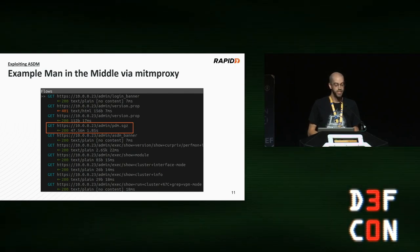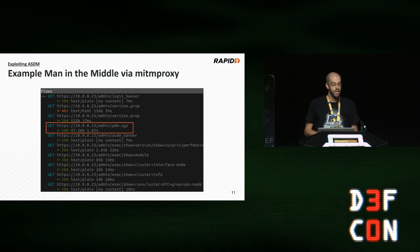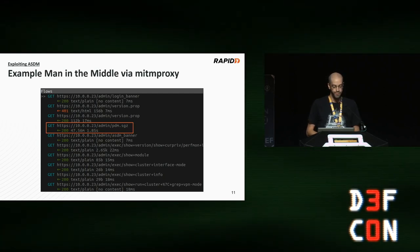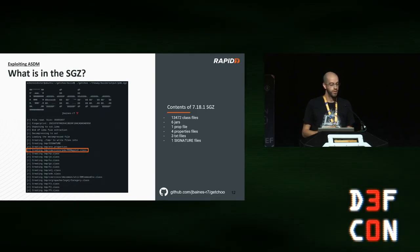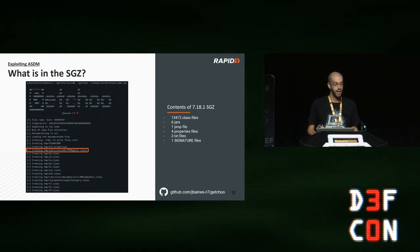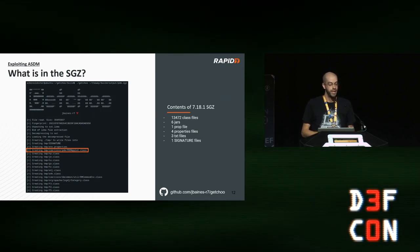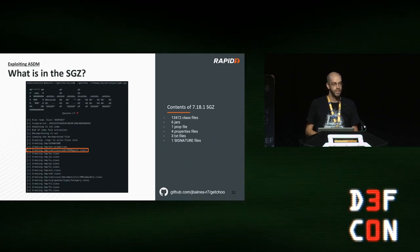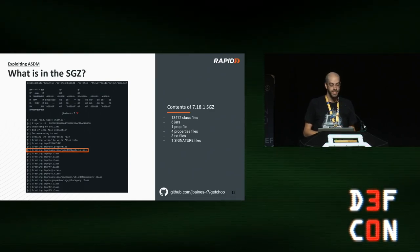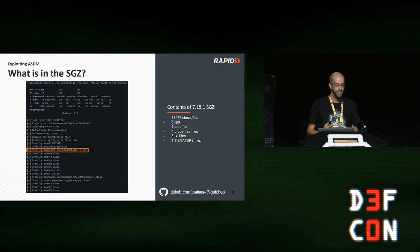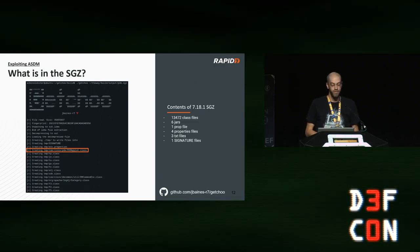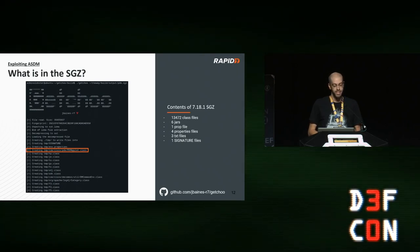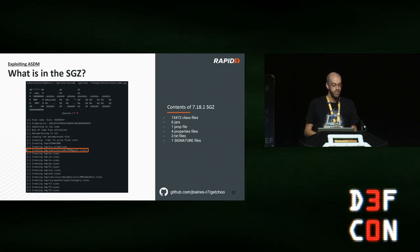If a man-in-the-middle can introduce malicious Java to the SGZ, then maybe the ASDM client will execute the malicious code. To explore that, I wrote an SGZ parser called GetYou. It can extract all files from an SGZ file and drop them to disk. A recent release of the SGZ file contained more than 13,000 Java classes — and importantly, it also contains a signature file with valid cryptographic signatures for all files in the SGZ. So if the ASDM client verifies those files against the signature file, an attacker shouldn't be able to introduce malicious Java.